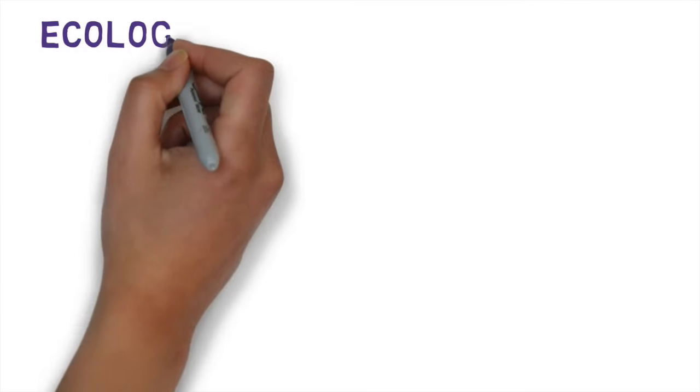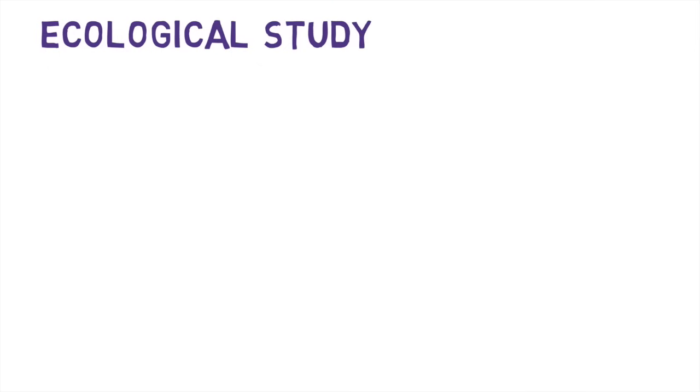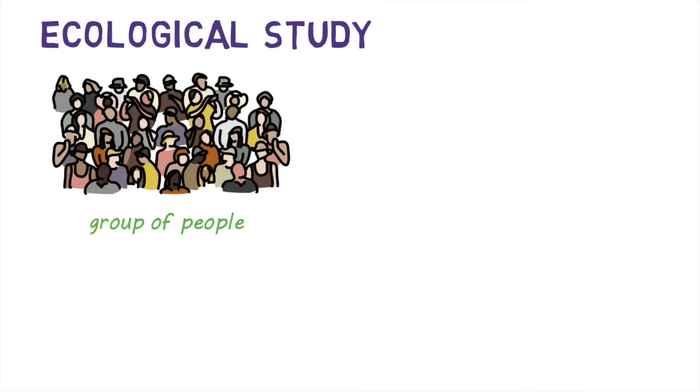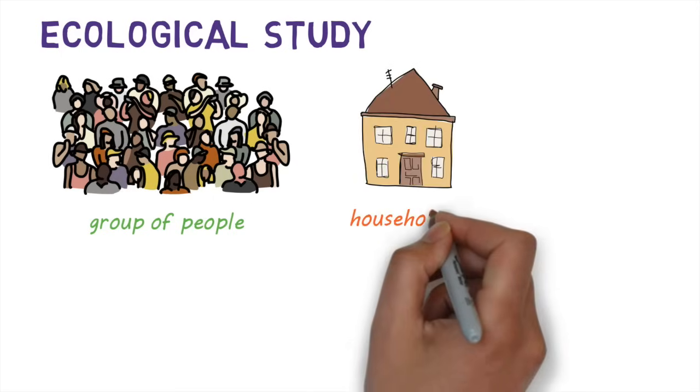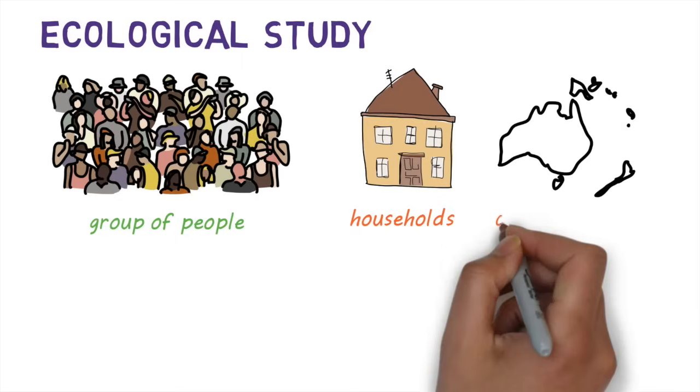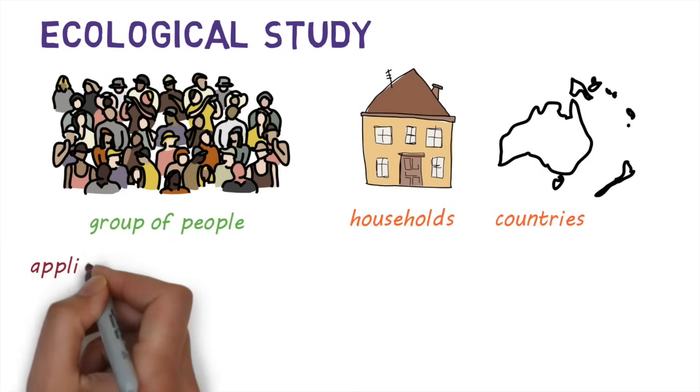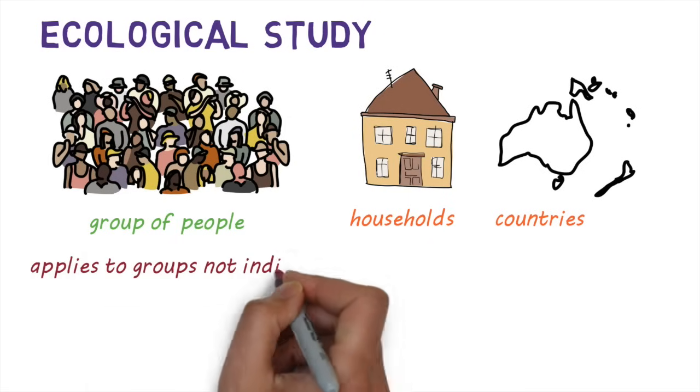Now let's have a look at a few different study types. An ecological study is a type of study where measurements like disease rates and information about exposures are made on a group of people. The groups can be as small as people in a house or as large as people in an entire country. It's important to remember that results and conclusions from ecological studies apply to a group and not to individuals.